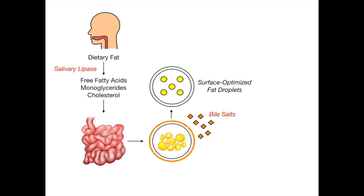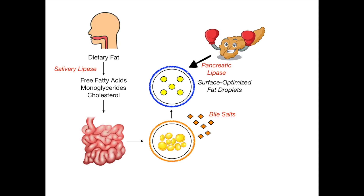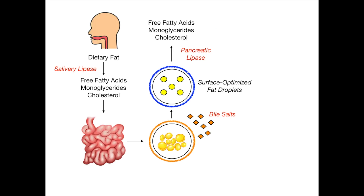Now that we have this optimized fat droplet with adequate surface area, this is where pancreatic lipase comes in. Earlier we talked about salivary lipase, but now the pancreas comes by with his boxing gloves on, ready to smash these fat droplets using pancreatic lipase. The fat droplets are surface-optimized for the pancreatic lipase — the bile salts had to take the globules and break them down into surface-optimized droplets first, or the pancreatic lipase wouldn't be as effective. So the pancreas goes for an uppercut and knocks out these fat droplets — converting them into free fatty acids, monoglycerides, and cholesterol.